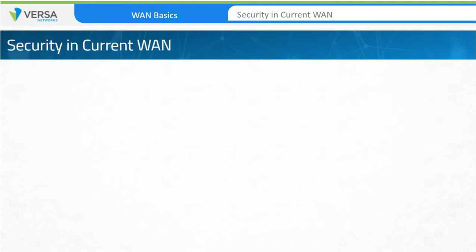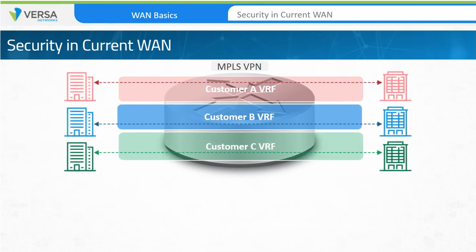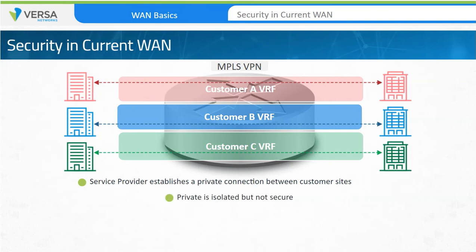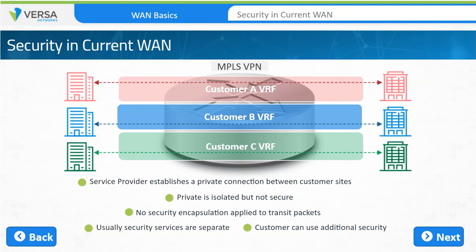In current MPLS-based VPN solutions, individual customer traffic is isolated by virtue of encapsulation using MPLS labels, and the service provider provides a private connection between customer sites. But private does not necessarily mean secure. Although packets are separated by MPLS labels, there is no encryption applied to transit devices, and service providers usually don't provide firewall or security services — their job is to connect your sites, not secure your data. When a WAN provider does offer security services, it's based on their offerings and limits what you can implement and control. If secure data transfer is needed between sites, it's up to the customer to encrypt the traffic before it is placed on the service provider circuit.